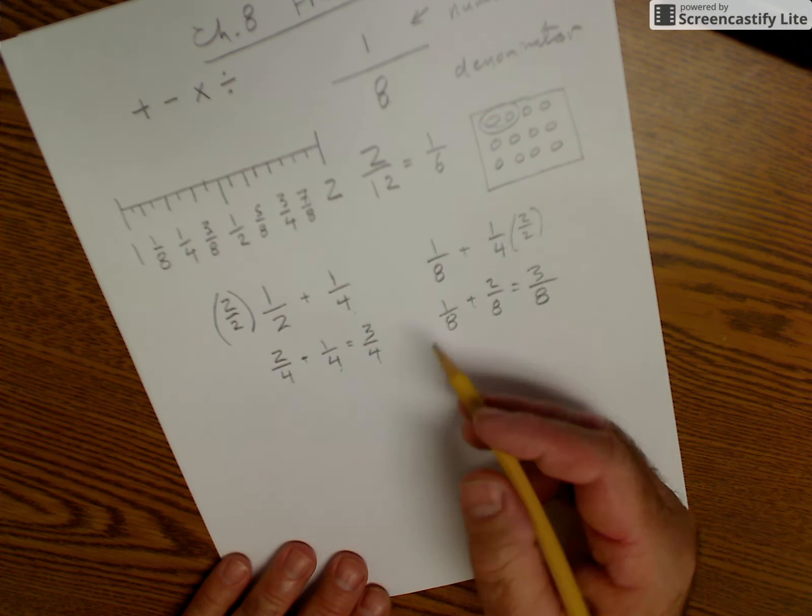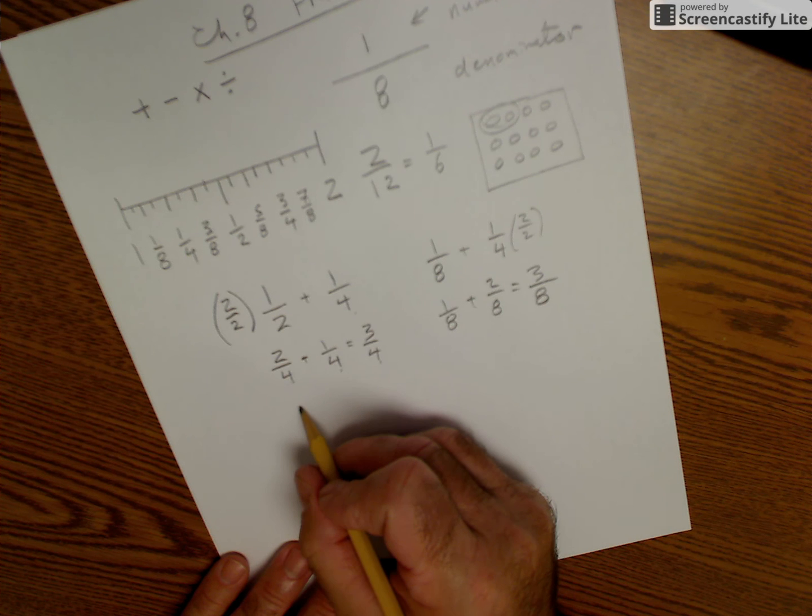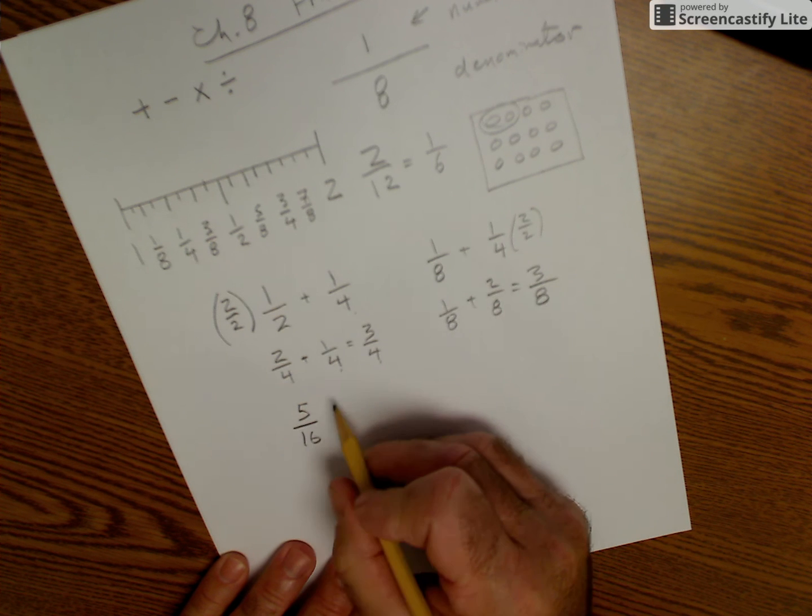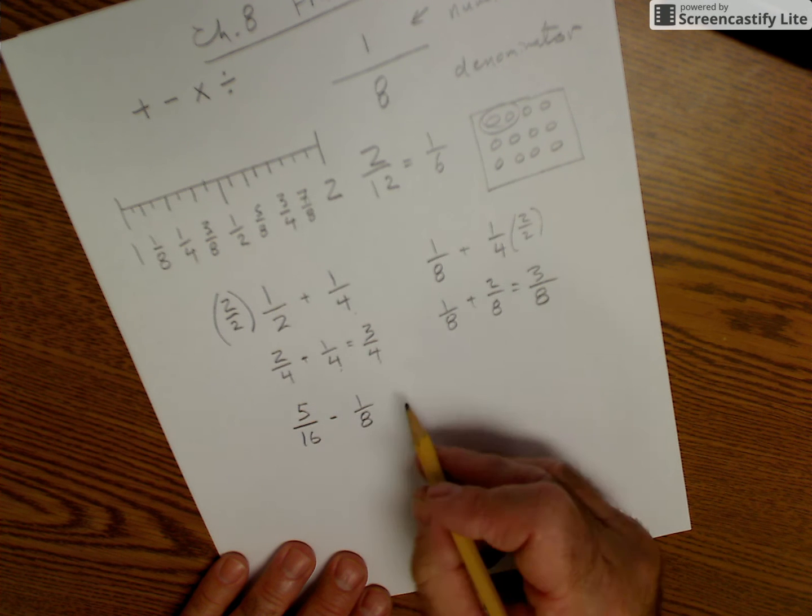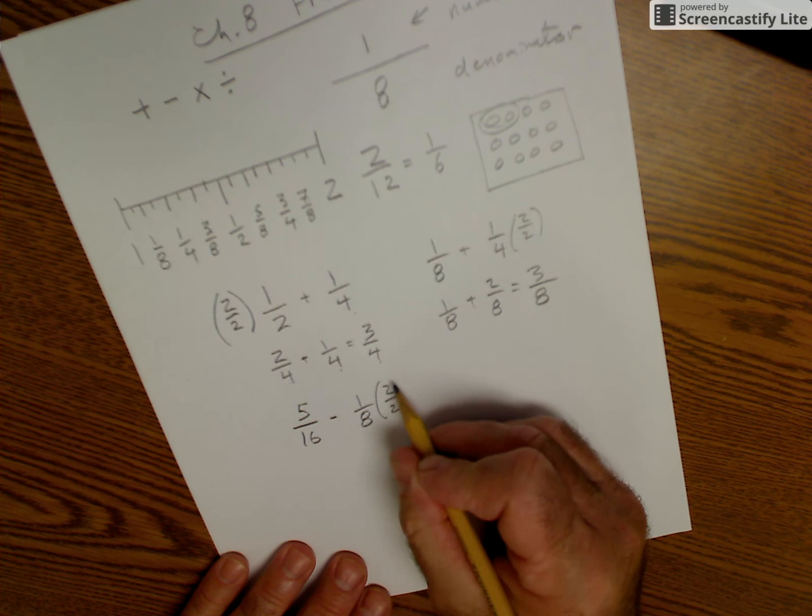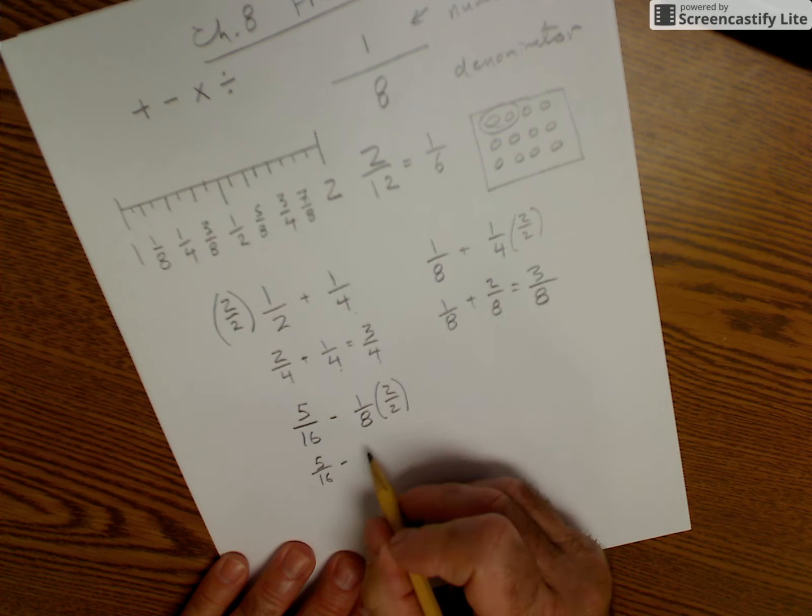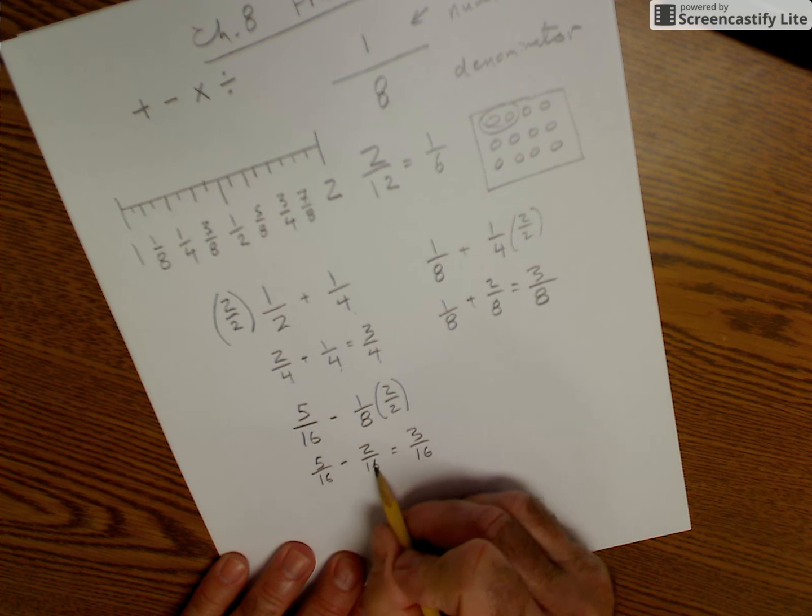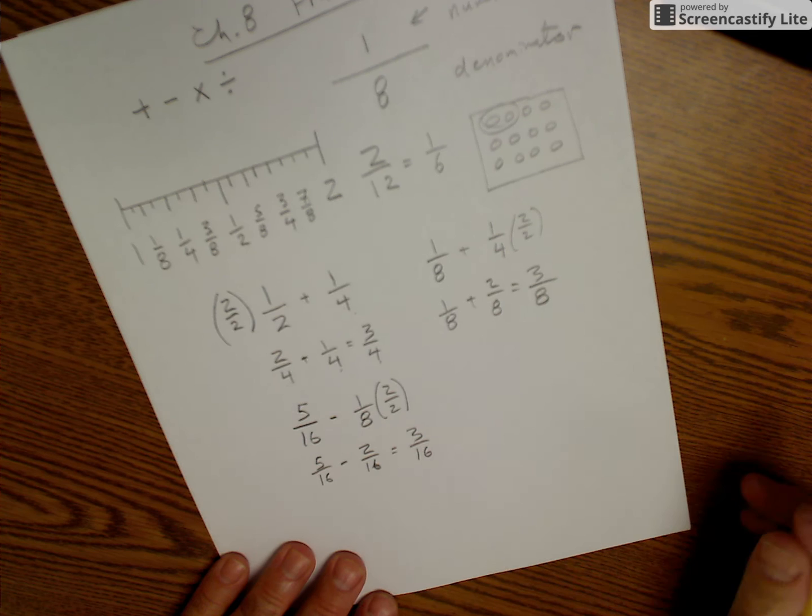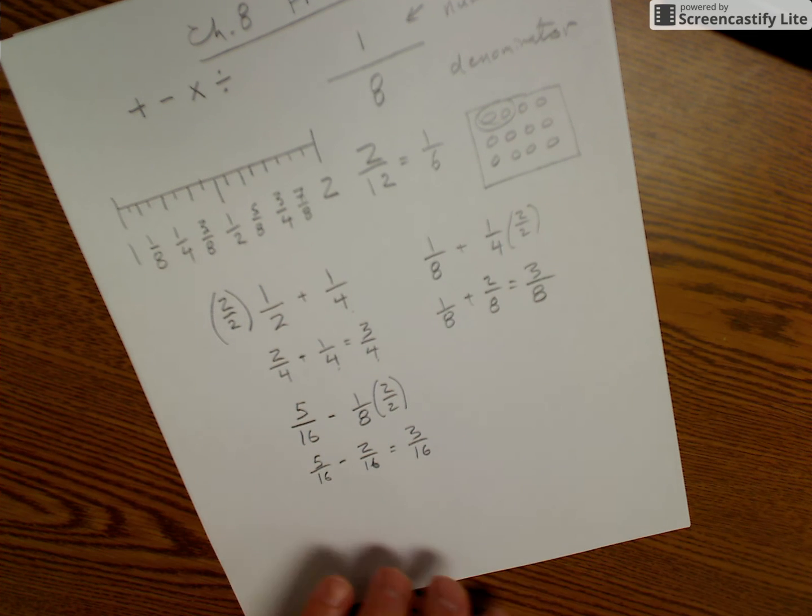Subtracting is exactly the same as addition. I need a common denominator. So let's say I have 5/16 minus 1/8. Common denominator is 8. I multiply by 1, which is 2/2. I have 5/16 minus 2/16, which gives me 3/16. Common denominator stays the same, and I subtract across the top. So that's adding and subtracting.